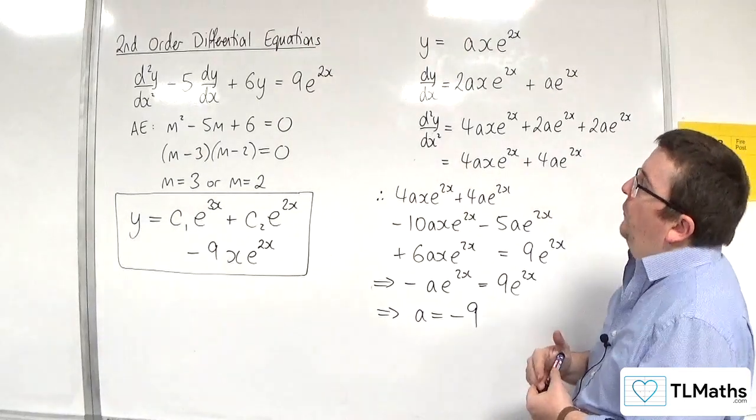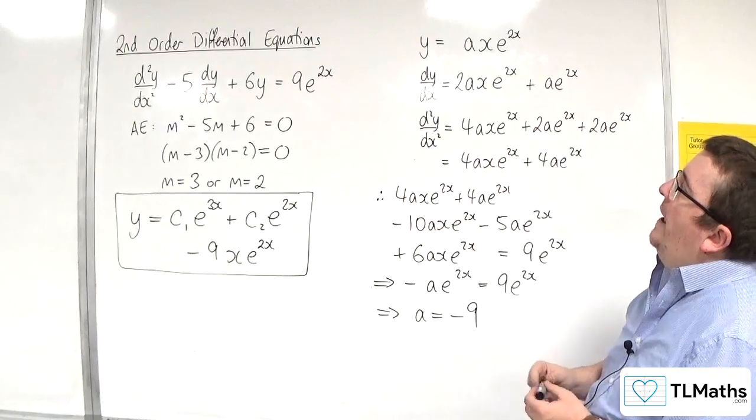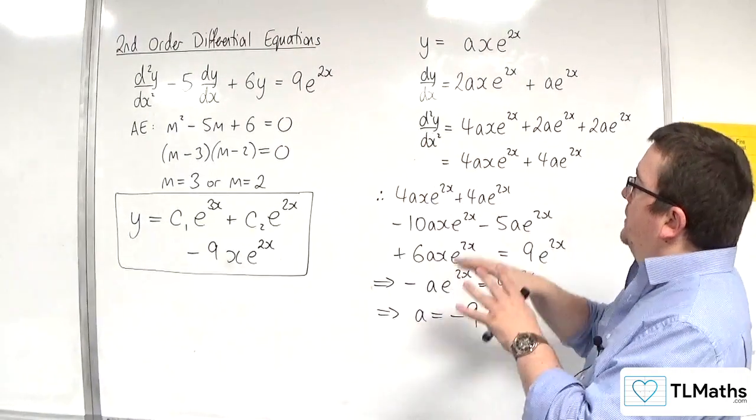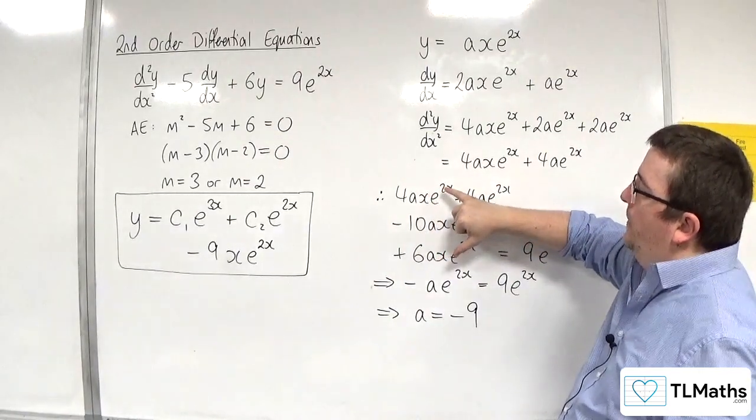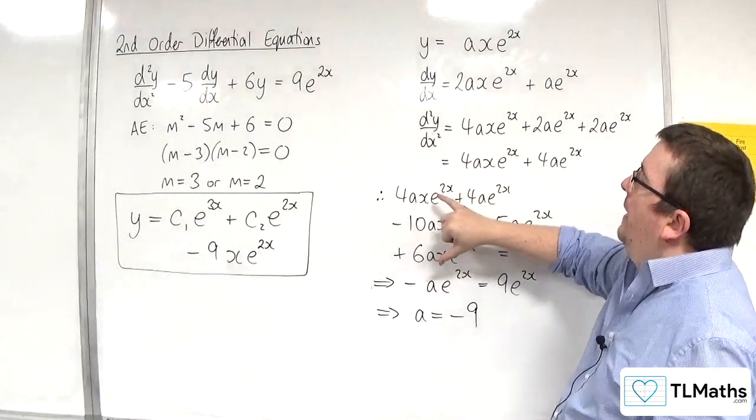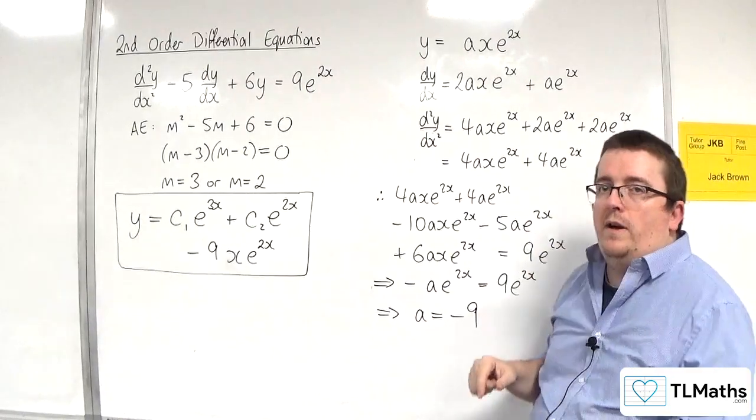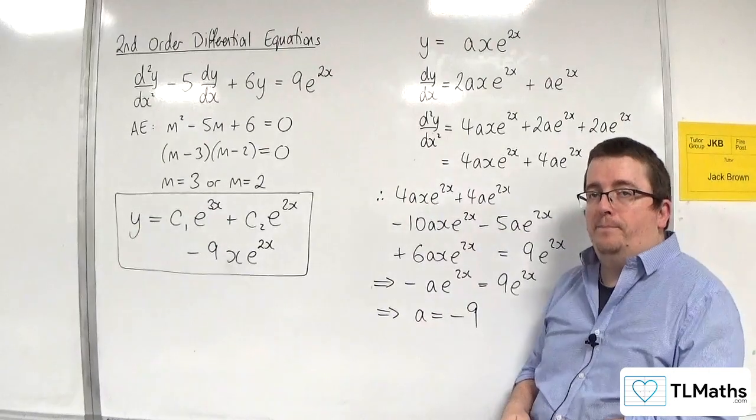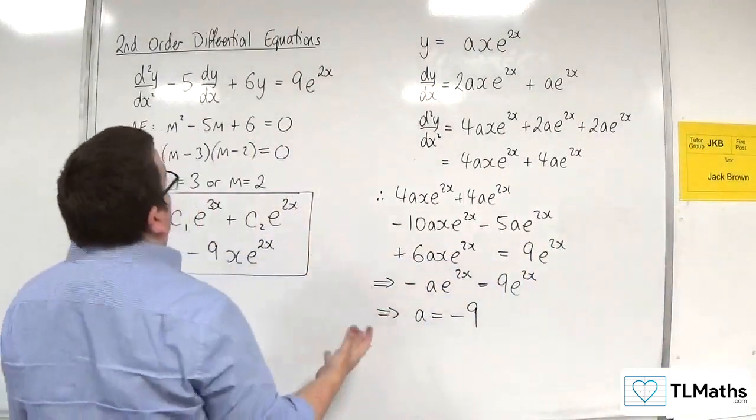So essentially, multiplying by x allows you to have this cancellation that we get here. So it's all going to come down to this part where that knocks out and it allows us to get this extra bit that we can put equal to the right-hand side 9e to the 2x to work out what that constant value has got to be. So that's how we can solve this special case.